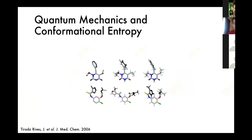Another tool we're using is quantum mechanics. The concept here is that while the global minimum energy conformation of a ligand in solution is rarely identical to the bound pose, it's also extremely rare for the bound pose to be very high in conformational energy. By evaluating the relative conformational energy of different poses, you can identify that if something is five or six kcal/mol higher in energy than another pose, it's probably relatively unlikely.